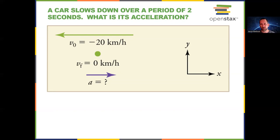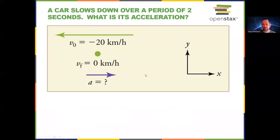So here we have positive acceleration for an object that is slowing down — velocity and acceleration vectors in opposite directions. This is one of the most common misconceptions in this unit. People think negative acceleration means something is slowing down — not necessarily. We have positive acceleration here for something slowing down, and the opposite can also be true.